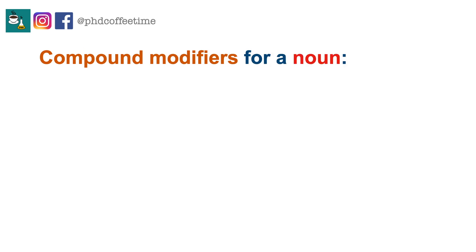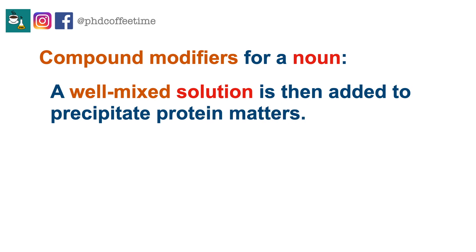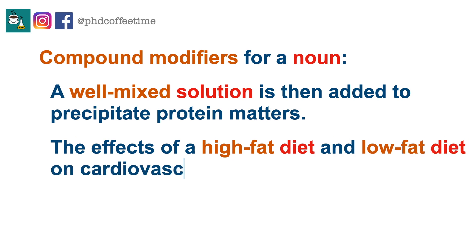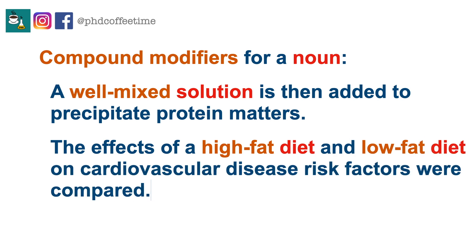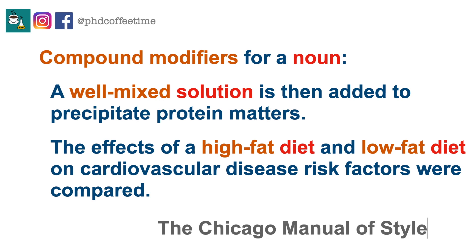For example, chitin-binding protein or DNA-binding protein — you put a hyphen in between and that makes it an adjective. If you omit that hyphen, it changes the meaning of the sentence. These are typically called compound modifiers for a noun. For example: a well-mixed solution, high-fat diet, low-fat diet. If you want to learn more about compound modifiers, you can refer to the Chicago Manual of Style.